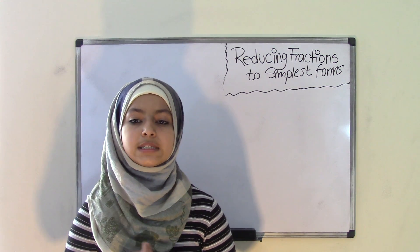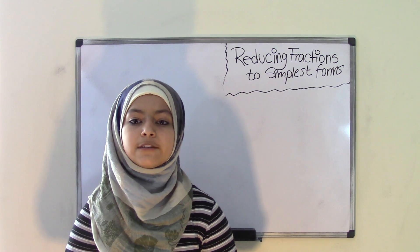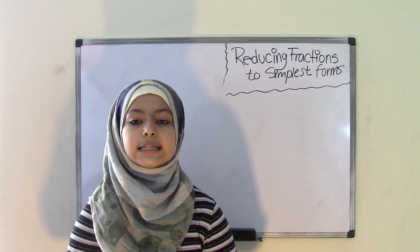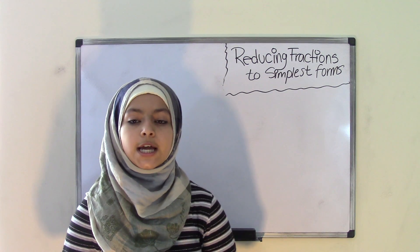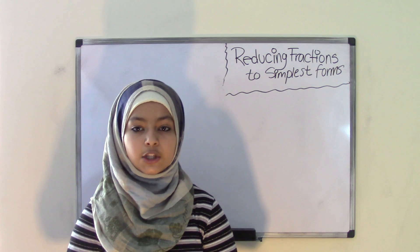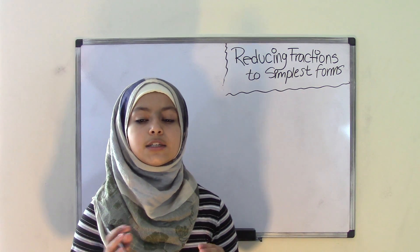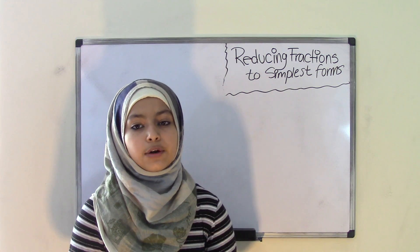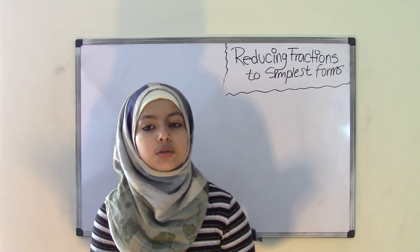Now when you're reducing a fraction to its simplest form, you are going to be dividing both the numerator and the denominator by the same number in order to get your fraction that is in the simplest form. That means it can no longer be divided and it is the smallest fraction that you can get out of that original fraction. So what I mean by that is...